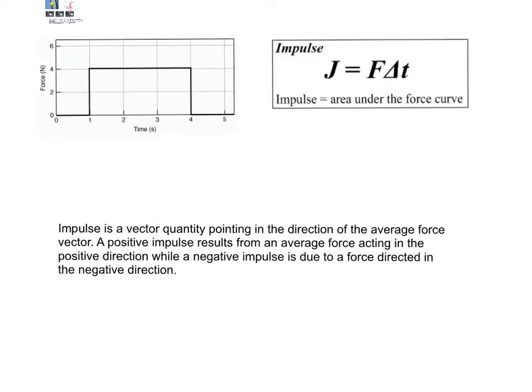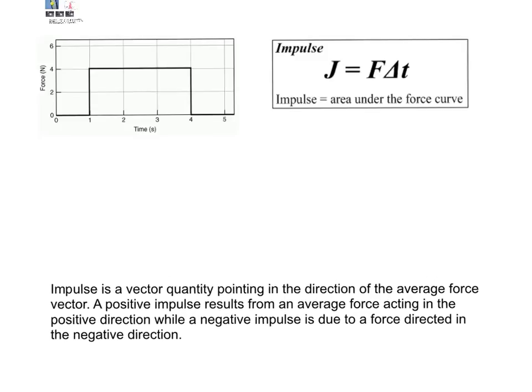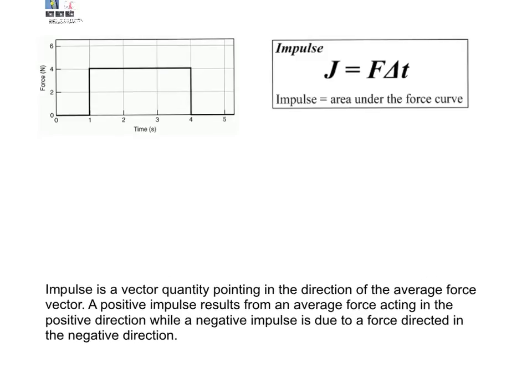So, impulse is a vector quantity that points in the direction of the average force vector. A positive impulse results from an average force acting in the positive direction, while a negative impulse is due to a force directed in the negative direction.